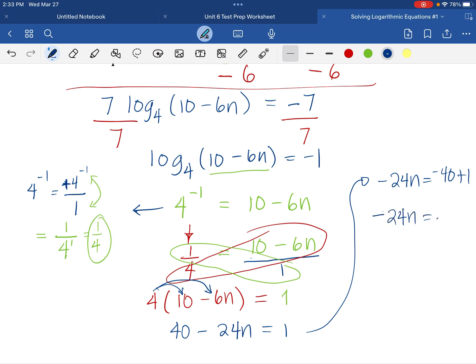So, negative 39. And now we can divide with negative 24. So, n is equal to 13 over 8 as we simplify our answer to the smallest possible fraction. Here's our answer.